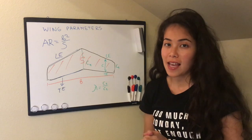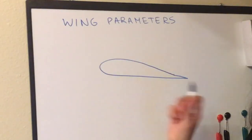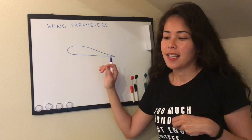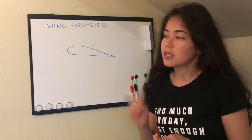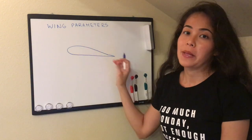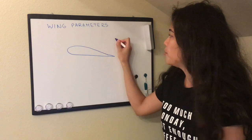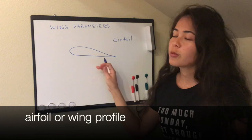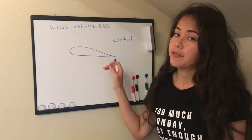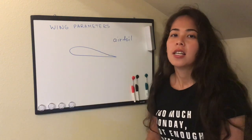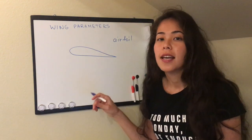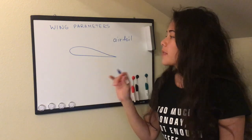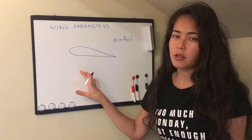Now let's go to the side view. From the side the wing will look like this — and what do we mean from the side? If we cut the wing at some point, we will see a shape like this, which is also called the airfoil, or the profile of the wing. We will see later that airfoils are different for different aircraft depending on their purpose, maneuverability, how much lift you want to produce, and so on.